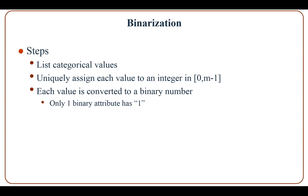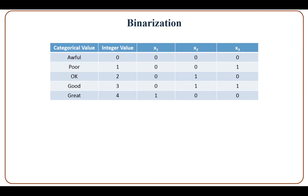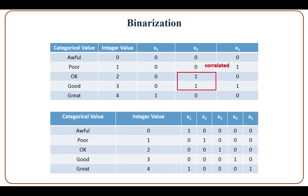Binarization is used to create attributes with values of 0 or 1. First, list all the categorical values, then uniquely assign each value to an integer in the interval from 0 to m-1, where m is the number of values. Then each value is converted into a binary number. For example, three attributes x1, x2, and x3 are used to encode five categorical values, though this method may cause unnecessary correlation. A better way is to use five binary attributes, one for each value.